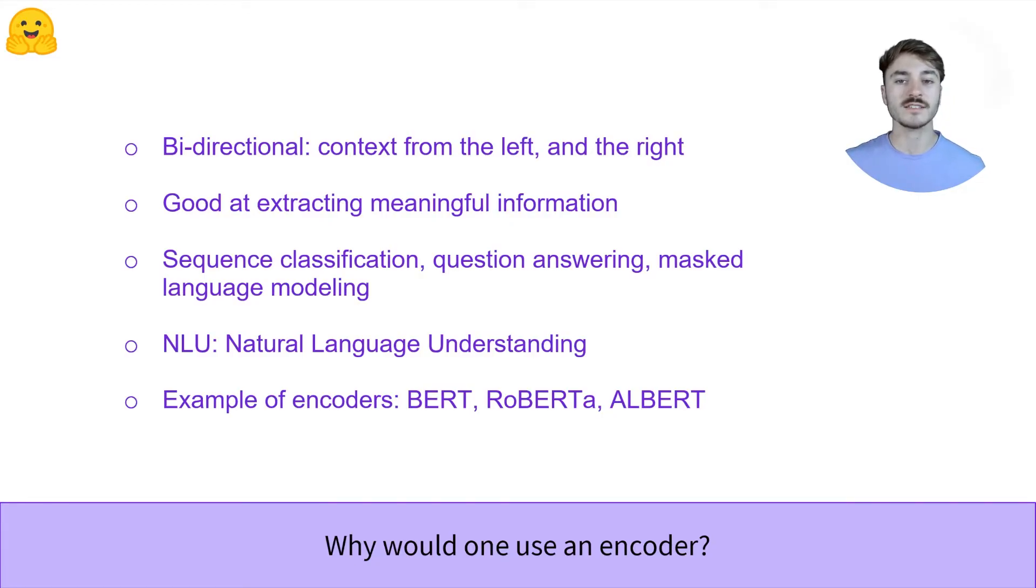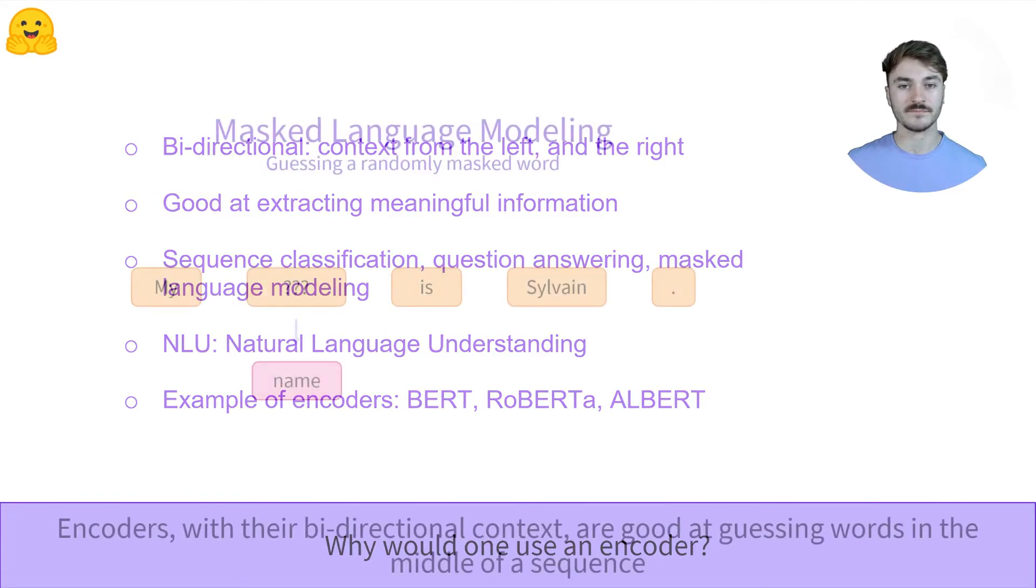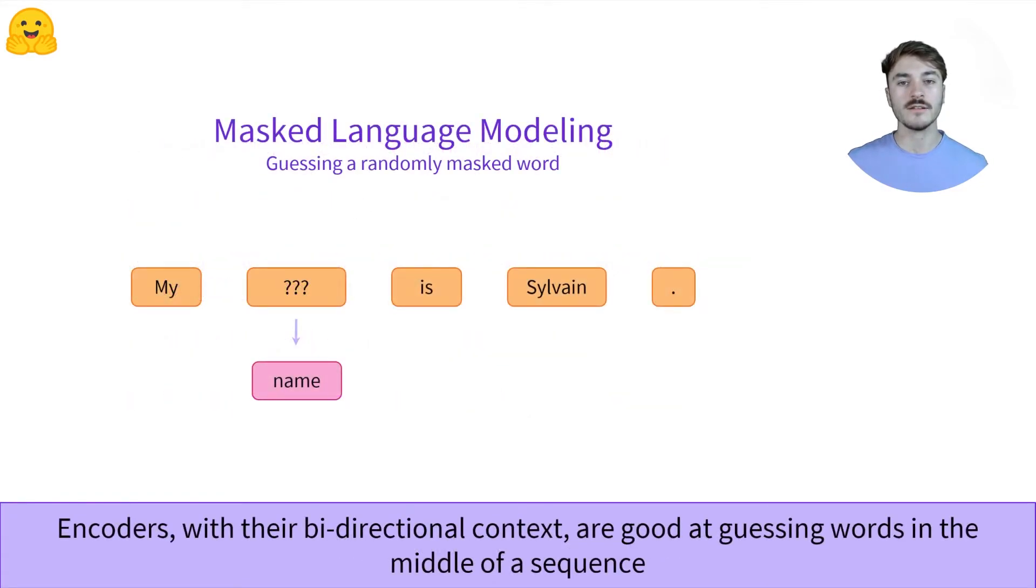Let's take a look at some examples where encoders really shine. First of all, masked language modeling, or MLM. It's the task of predicting a hidden word in a sequence of words. Here, for example, we have hidden the word between my and is. This is one of the objectives with which BERT was trained. It was trained to predict hidden words in a sequence.